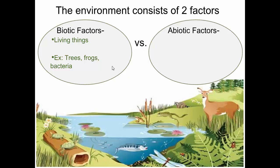What does the prefix 'a' do to a word? It means 'not.' So what are abiotic factors? Non-living things. In my courtyard, that would be the soil, the rocks, the water, the air, and oxygen — those are all abiotic factors because they're not living. They're still important and still a part of the ecosystem, but they're non-living. Temperature is often an important abiotic factor that influences ecosystems.